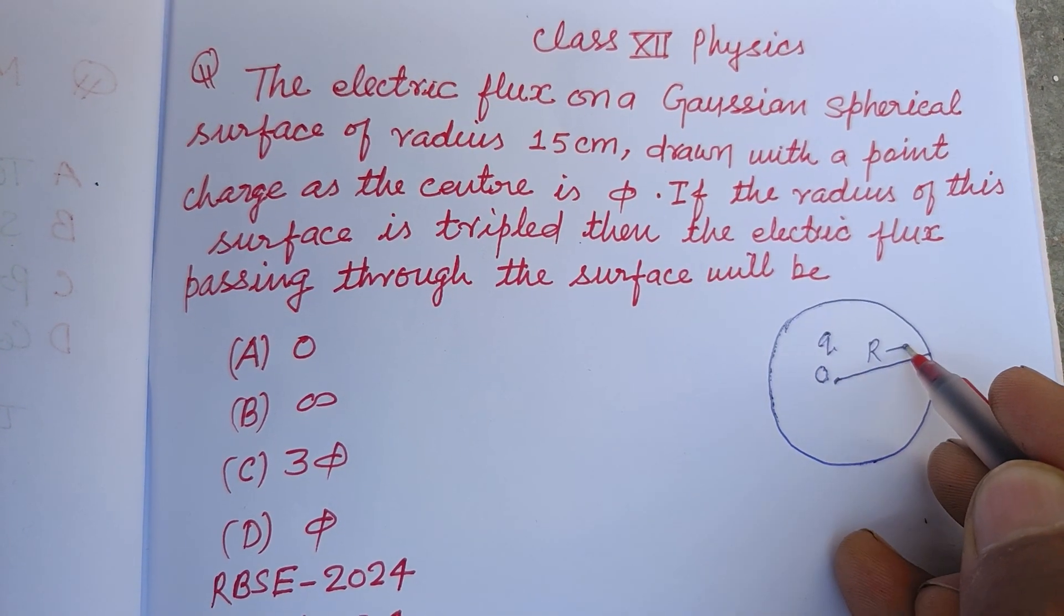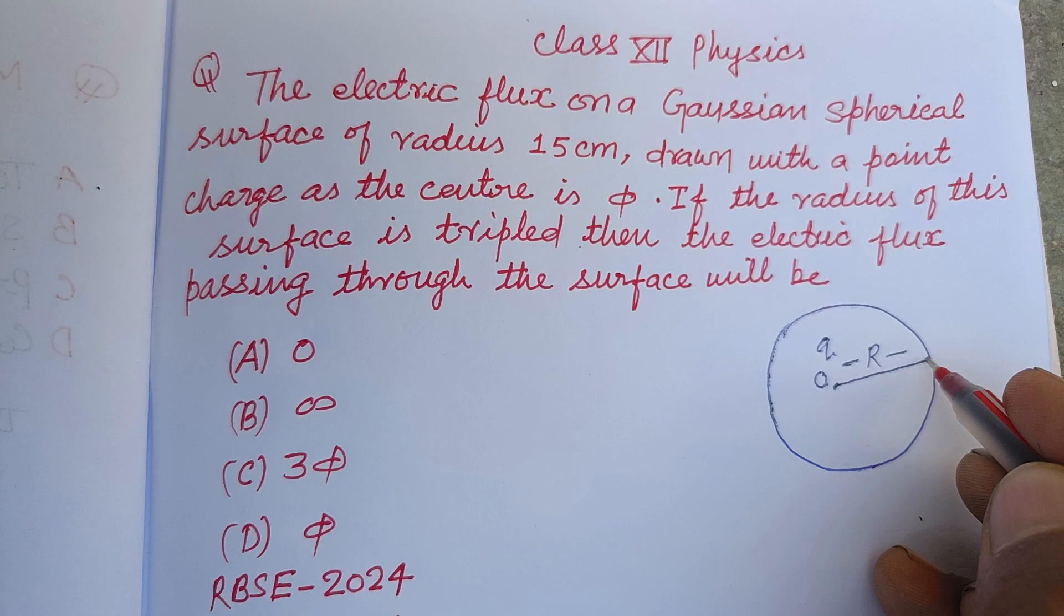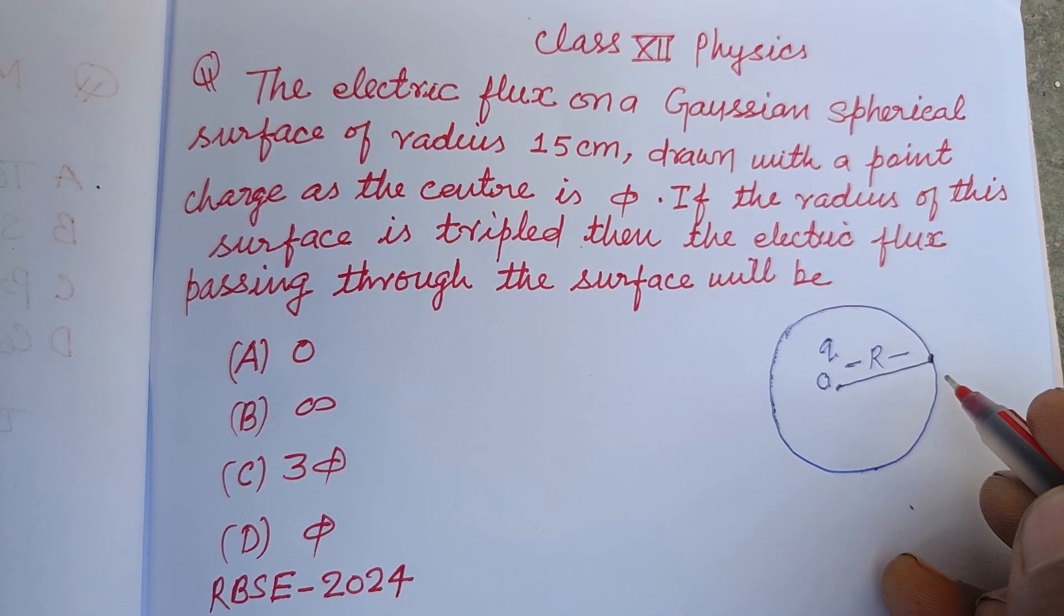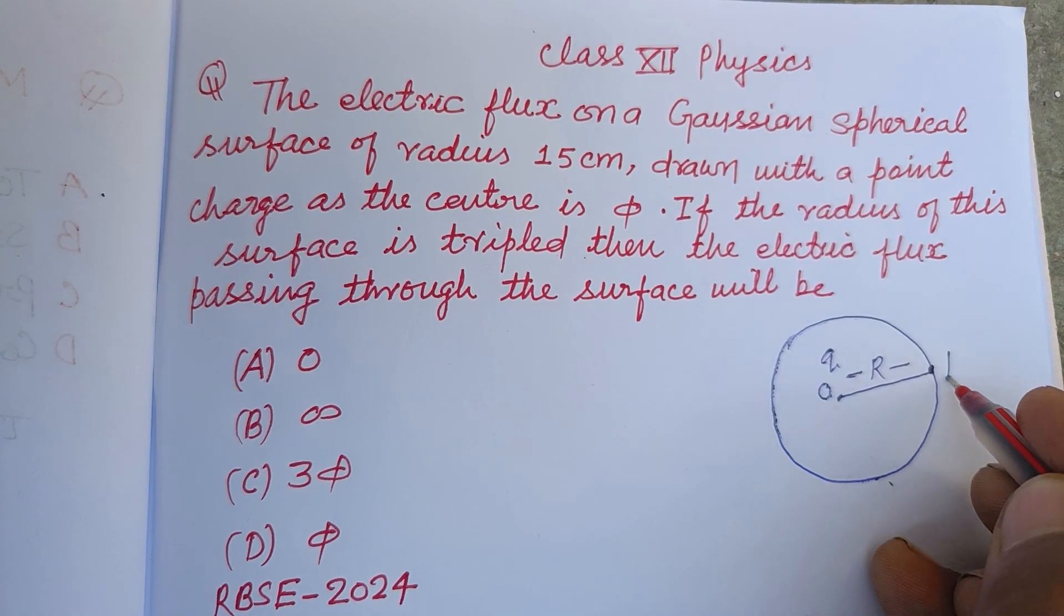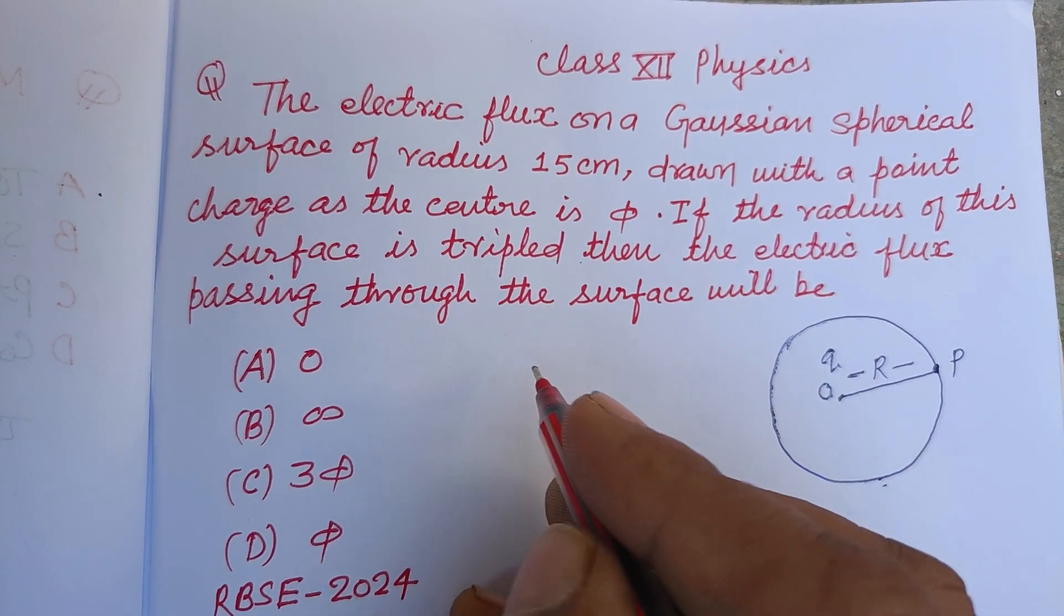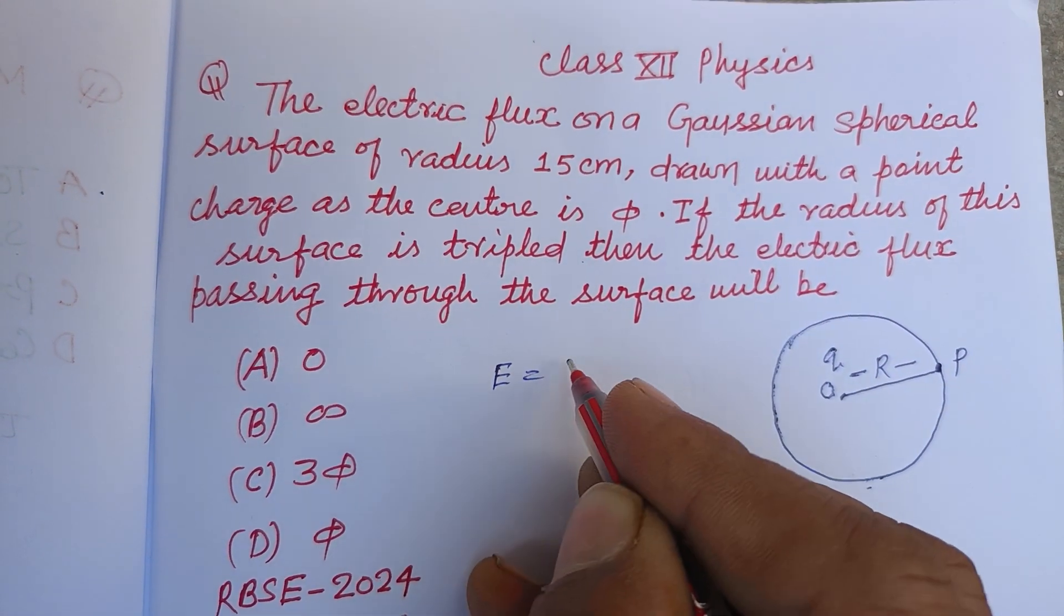And here, electric field at point P due to charge Q equals 1/(4πε₀) × Q/R².